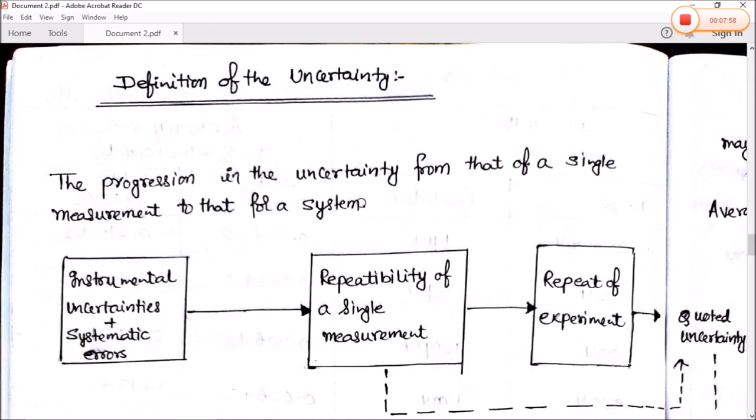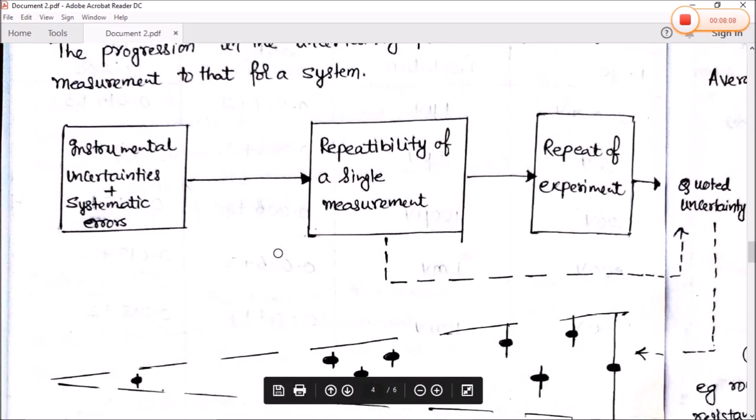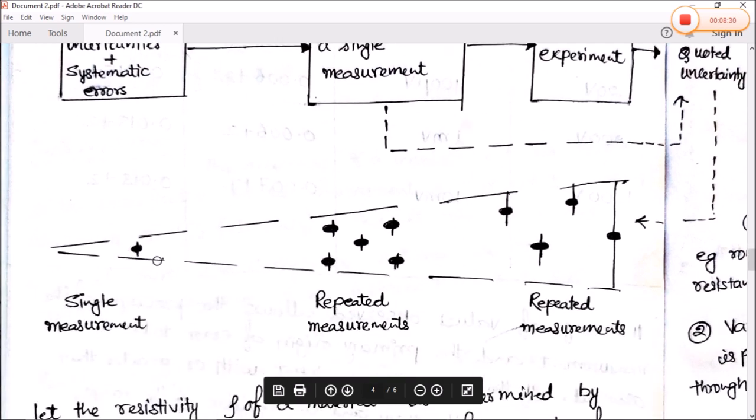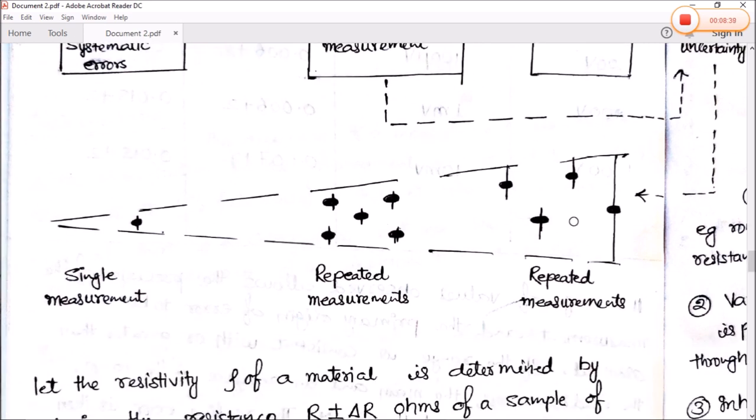Next is uncertainty propagation. The process of progression in the uncertainty from that is single measurement to that of system. So it is a block diagram of uncertainty: the instrument uncertainty plus systematic errors, next is repeatability of the single measurement, then repeat of the experiment, and this value continues for the quoted uncertainty values. So this is for single measurement. When repeated, we measure it one, two, three, four, five times. This is repeated measurement, and then if this repeats, the value repeats. This is how the process continues.